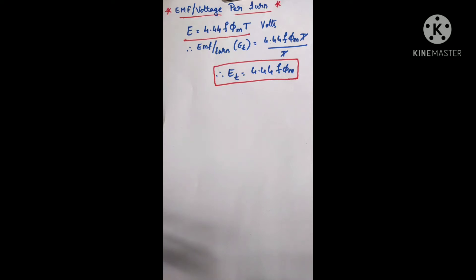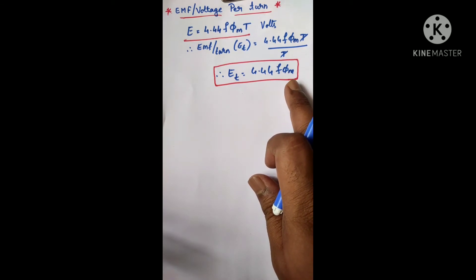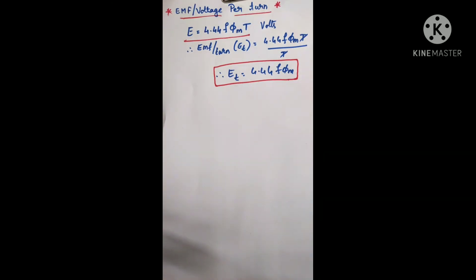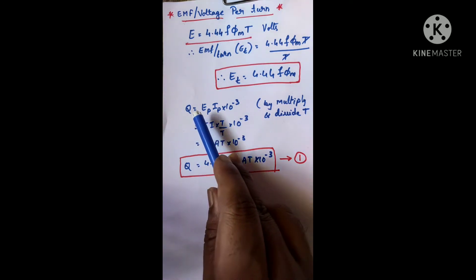Now let us relate this EMF induced per turn ET in terms of an output equation. To do that, we have the flux parameter φm as the variable. I will express this flux in terms of the output equation Q and then substitute that into the ET formula, so that we get ET in terms of the output equation. Let's see how to relate this — the output equation can be given as Q equals...